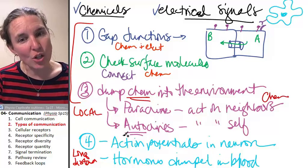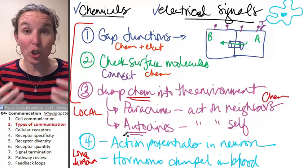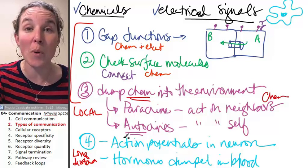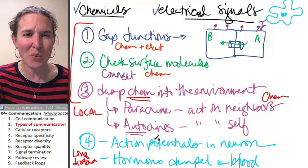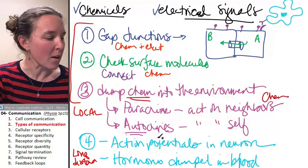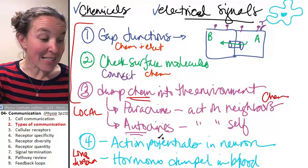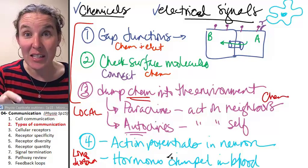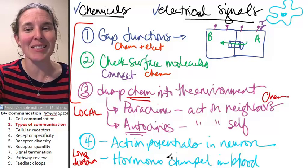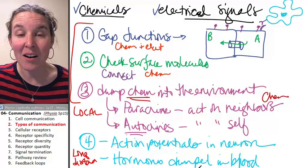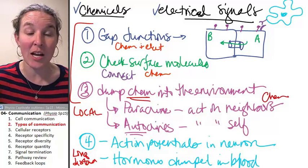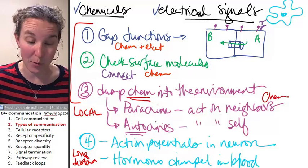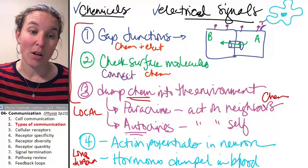Endocrine system and nervous system are systems that cover the whole body and allow communication long distances. Gap junctions, surface molecules, and local chemicals happen at a much smaller scale. Those really aren't body system wide. The next thing we're going to spend the rest of the time talking about is specifically receptors, because these guys aren't going to be able to communicate jack-a-doodle unless the cell receiving the information has the correct receptor.